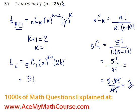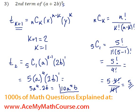So 5 times a to the power of 4 times 2b to the power of 1 simplifies to 5a⁴ × 2b, and 5 times 2 is 10, so we have 10a⁴b.